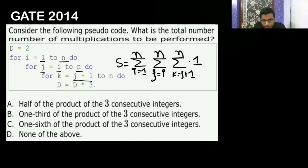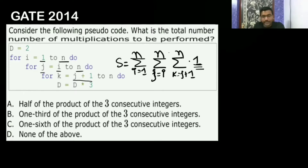They are asking what is the total number of multiplications to be performed. This is the only multiplication being done here — one multiplication per iteration of the third inner loop. So we are finding how many total iterations we are performing. In every iteration we have one multiplication, and we sum all the multiplications. This inner loop runs with k equal to j+1 till n, which depends on the value of j. The second inner loop has j equal to i to n, and the outer loop runs i equal to 1 to n.